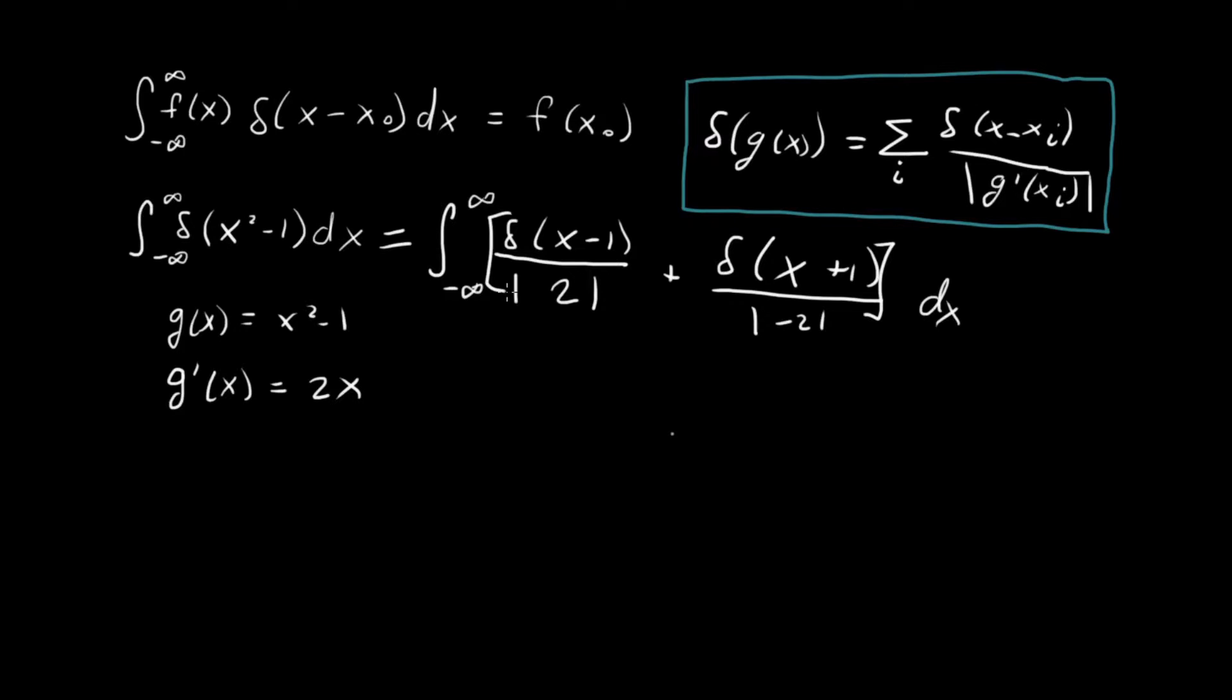This is great. We've taken this integral which we didn't initially know how to solve and reduced it to a sum of two integrals, each with a delta function that we actually know how to solve. This is straightforward - integrating this we get 1/2, same thing here we get another 1/2, so the whole thing comes out to be 1.